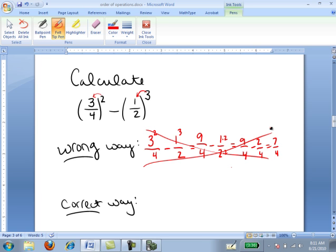This is not correct because these exponents are applied to the entire fraction. So when I say (3/4)², it means 3/4 times 3/4, which is the 3 is squared and the 4 is squared. Similarly, (1/2)³ is 1/2 times 1/2 times 1/2, so the 1 is being cubed and the 2 is being cubed.